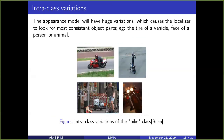Intra-class variation is also connected with the discriminative region problem. For the bike category you can see large variation in appearance. If you train weakly supervised detectors, they will end up looking at very discriminative parts like, for example, the wheel of the bike, rather than the whole object.